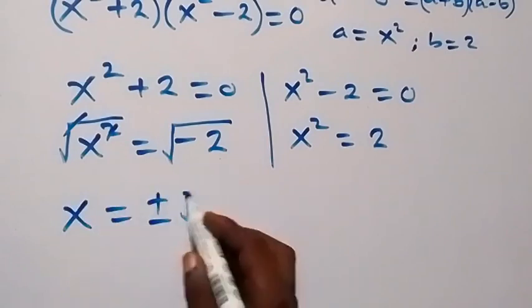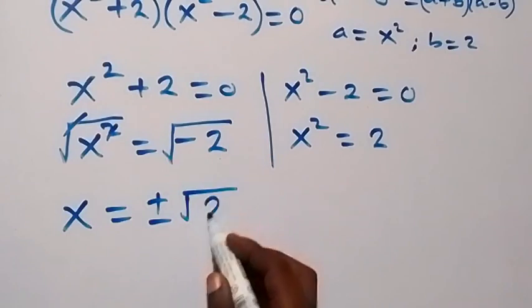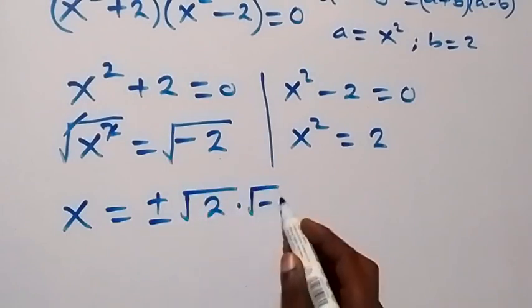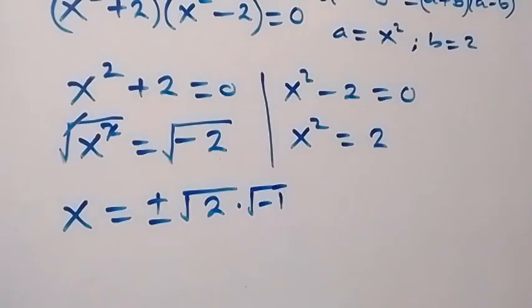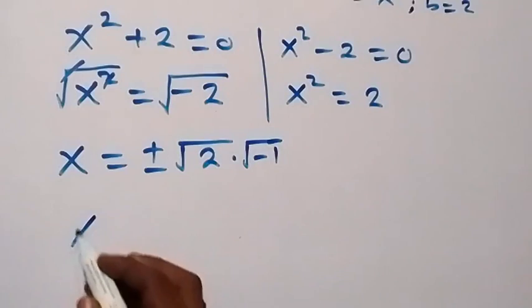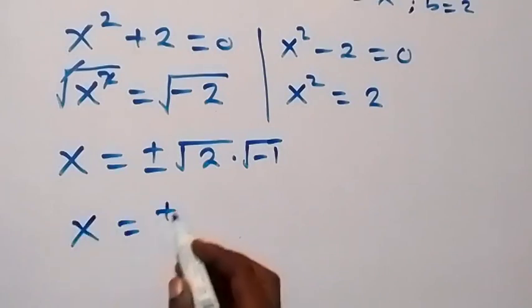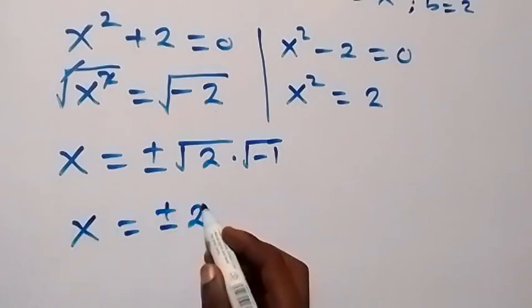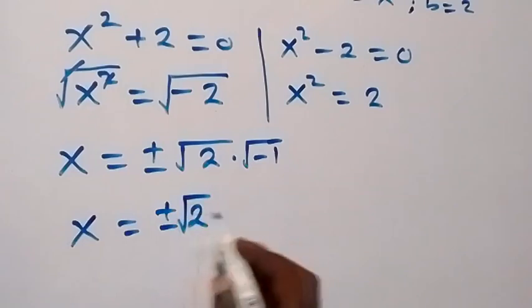Here we can write this as root 2 times root minus 1. And root minus 1 is i. So we have x now equals to plus or minus root 2 i from here.